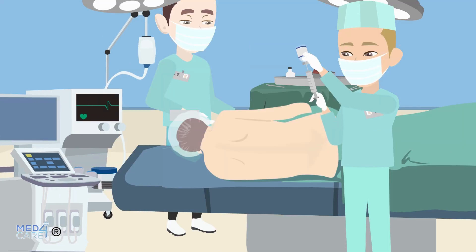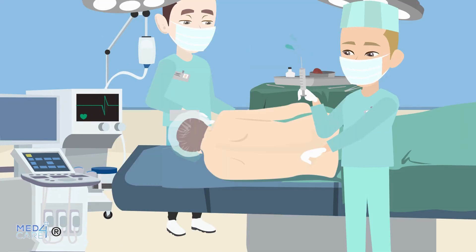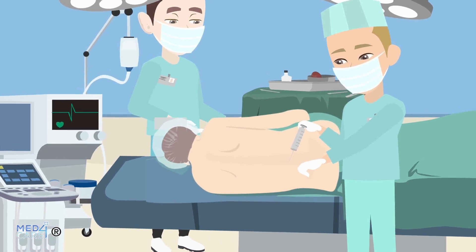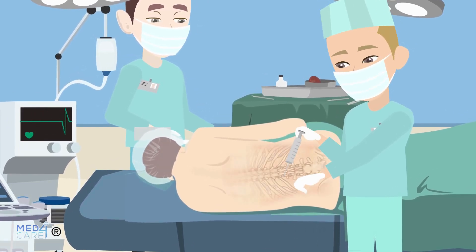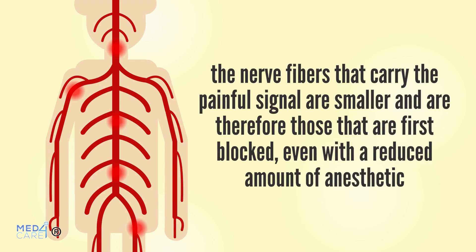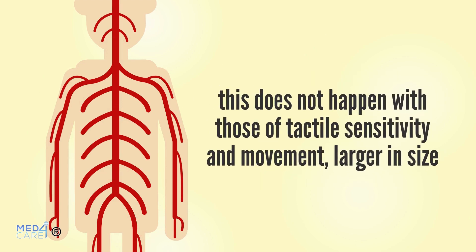Spinal anesthesia therefore selectively blocks nerve signals. This happens because the nerve fibers responsible for the transport of signals have different sizes and require different dosages to be blocked. The nerve fibers that carry the painful signal are smaller and therefore are the ones first blocked, even with a reduced amount of anesthetic. This does not happen with those of tactile sensitivity and movement, which are larger.